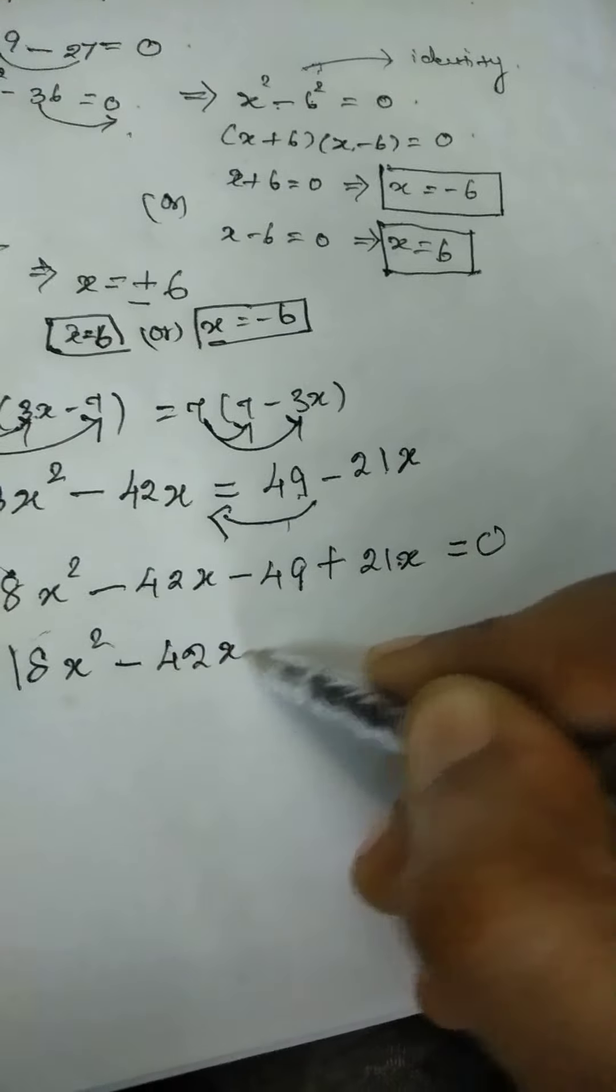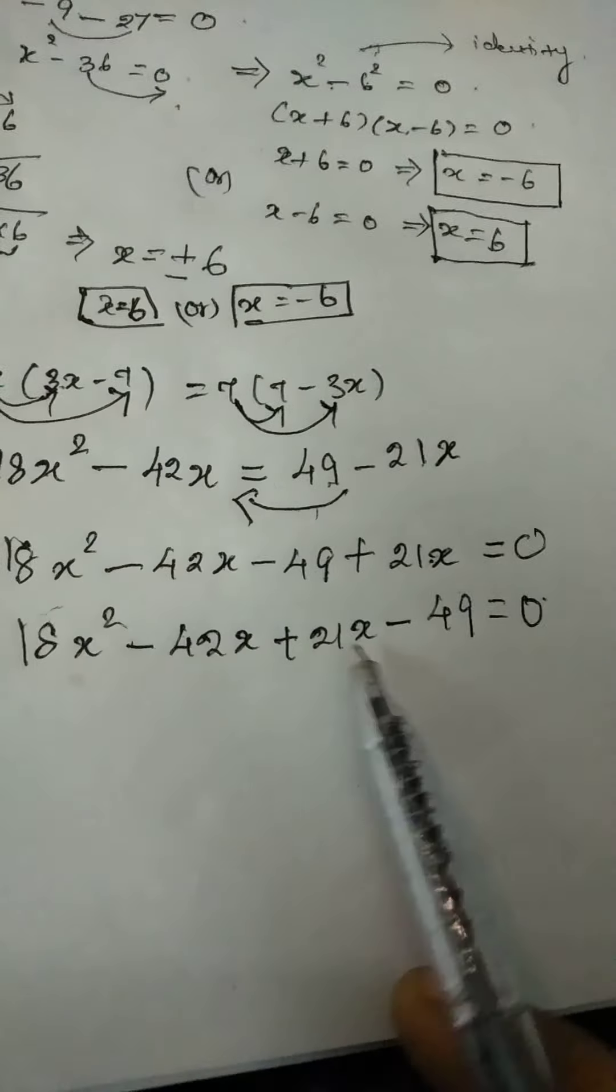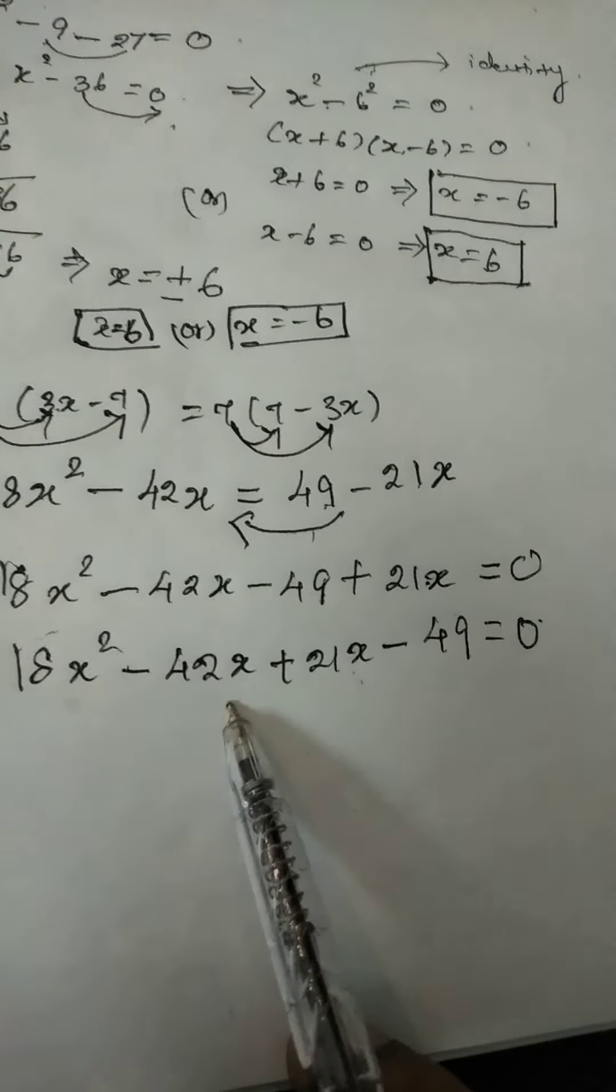See 18x square minus 42x plus 21x minus 49 equal to 0 because already it is in the form of splitting the middle term.